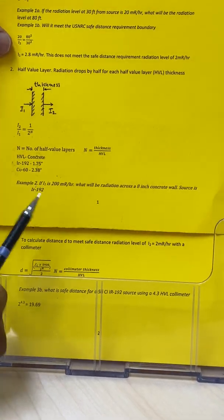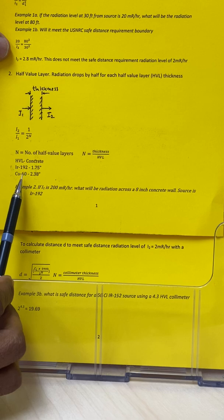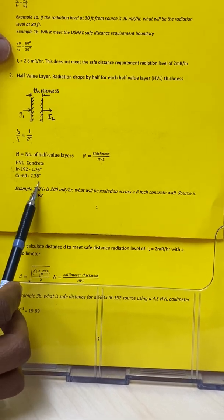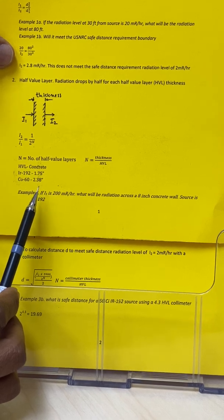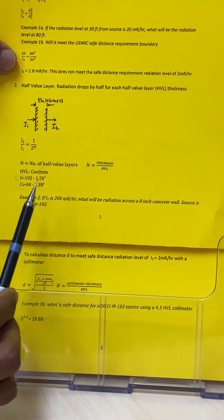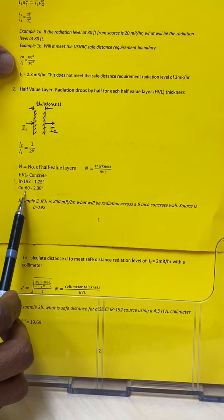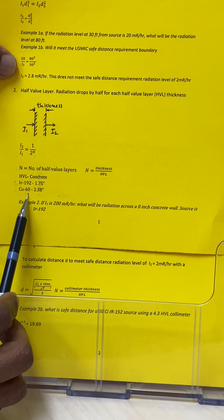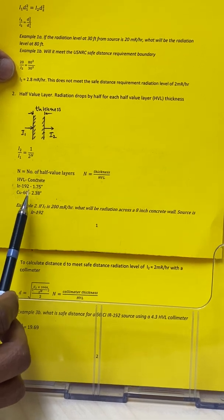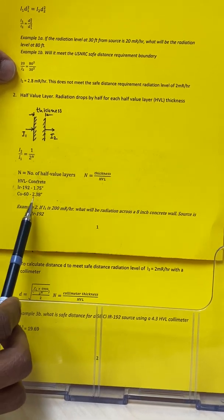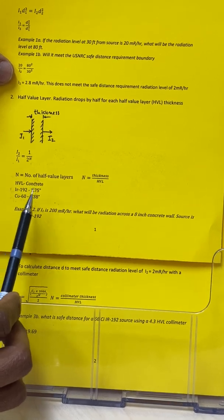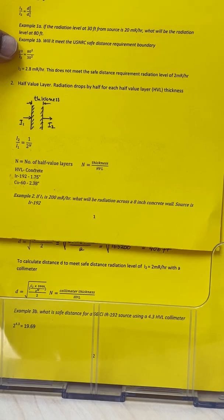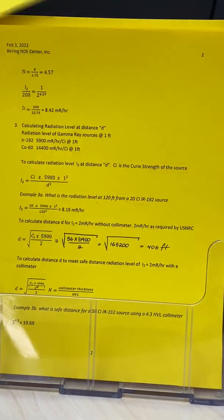The half value layer for concrete is given here. For iridium-192, it's 1.75 inches. For cobalt-60, it's 2.38. You will wonder why is it different. The reason is that the energy level of cobalt-60 is not the same as iridium-192. In fact, it's much higher, and that's why the half value layer for cobalt is higher than for iridium-192. If you have lead or some other materials, it will be a different half value layer thickness.